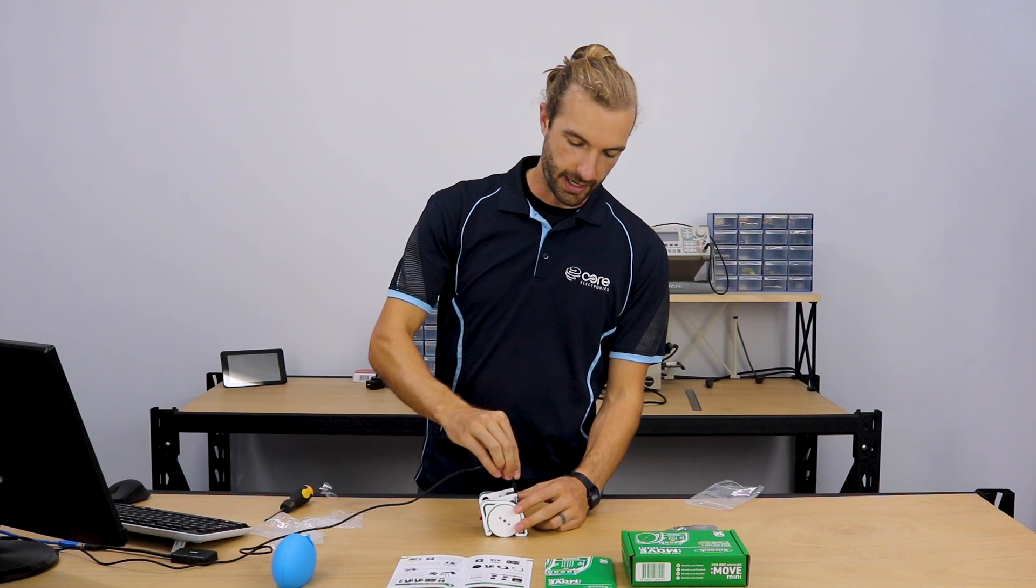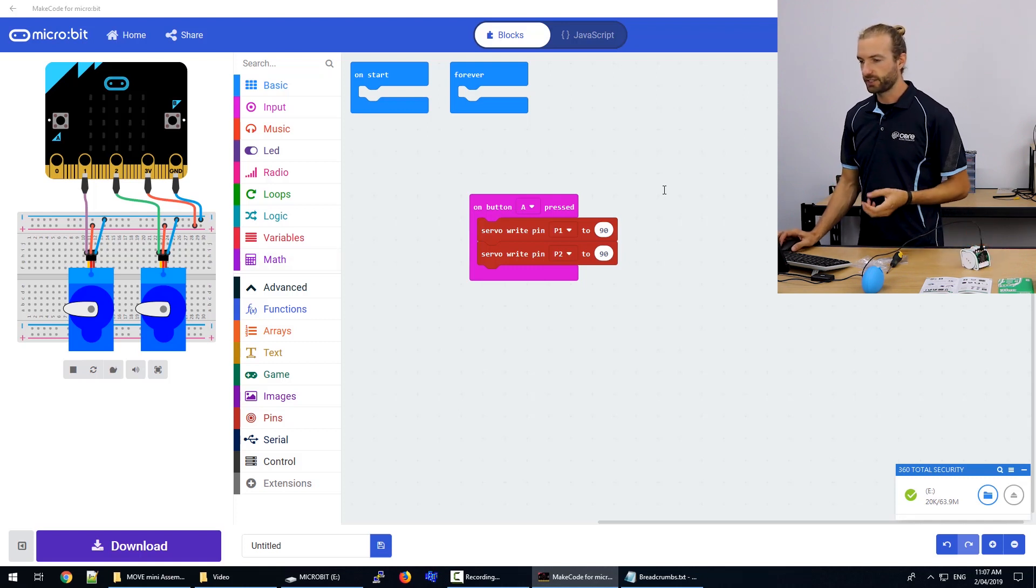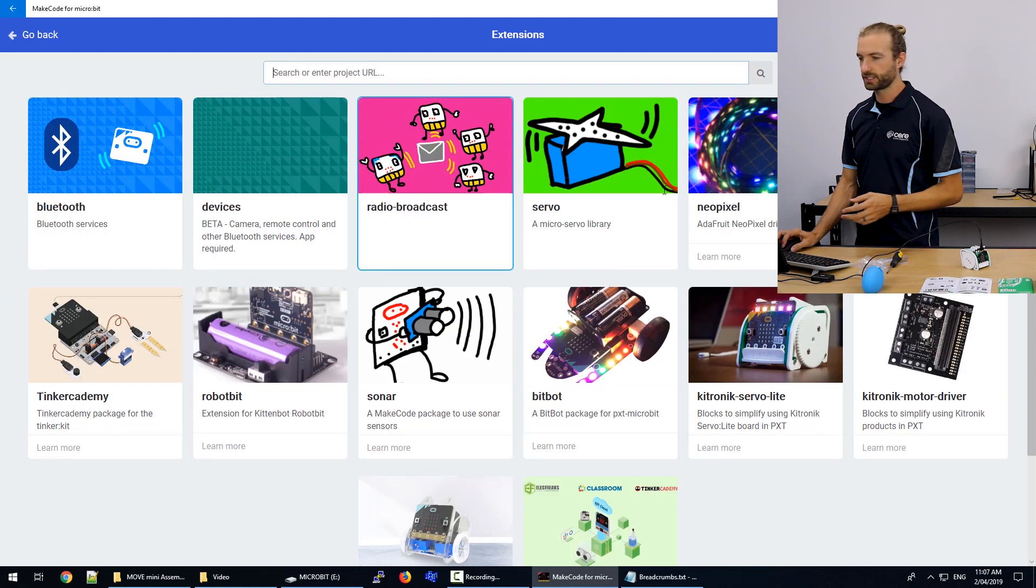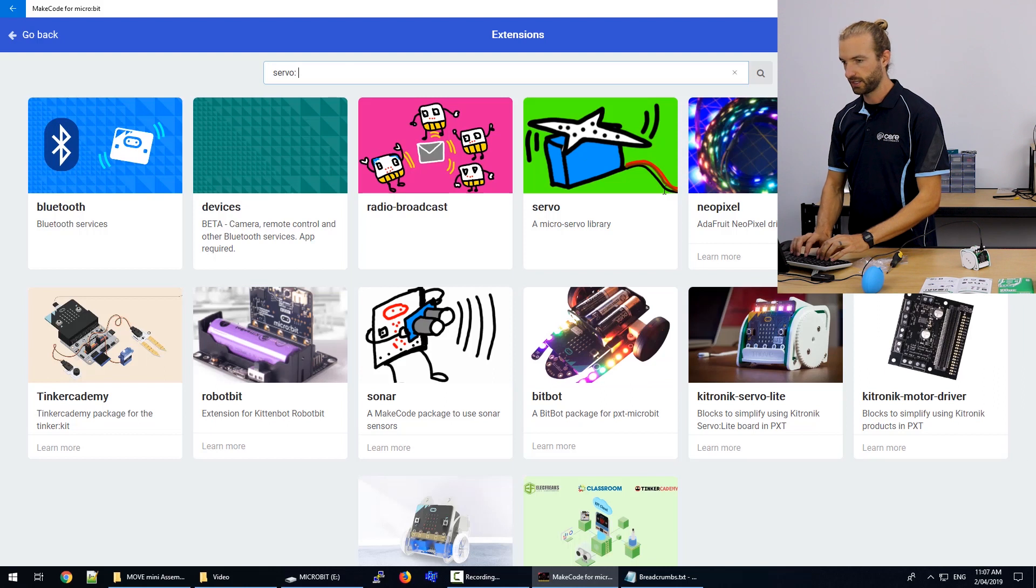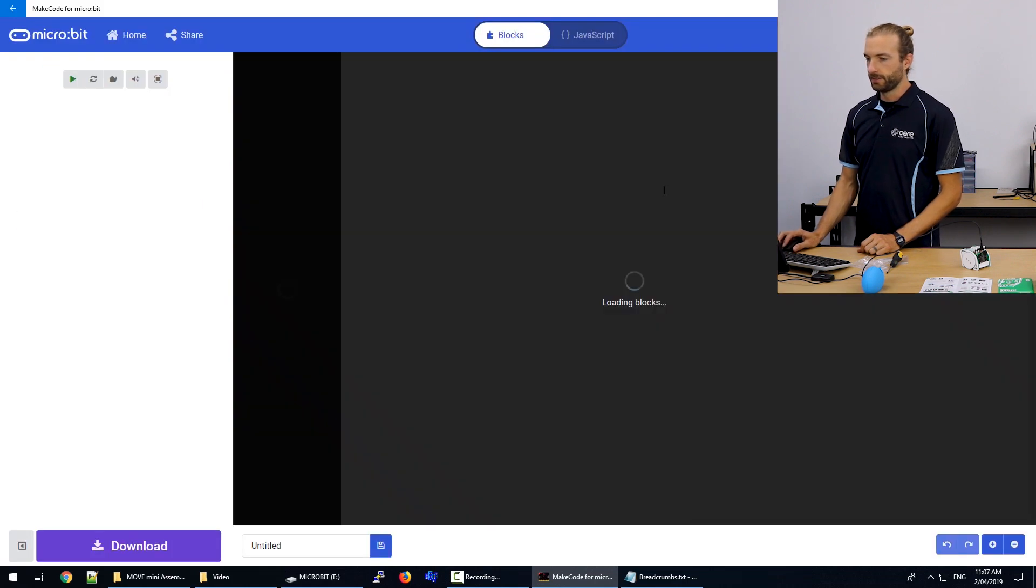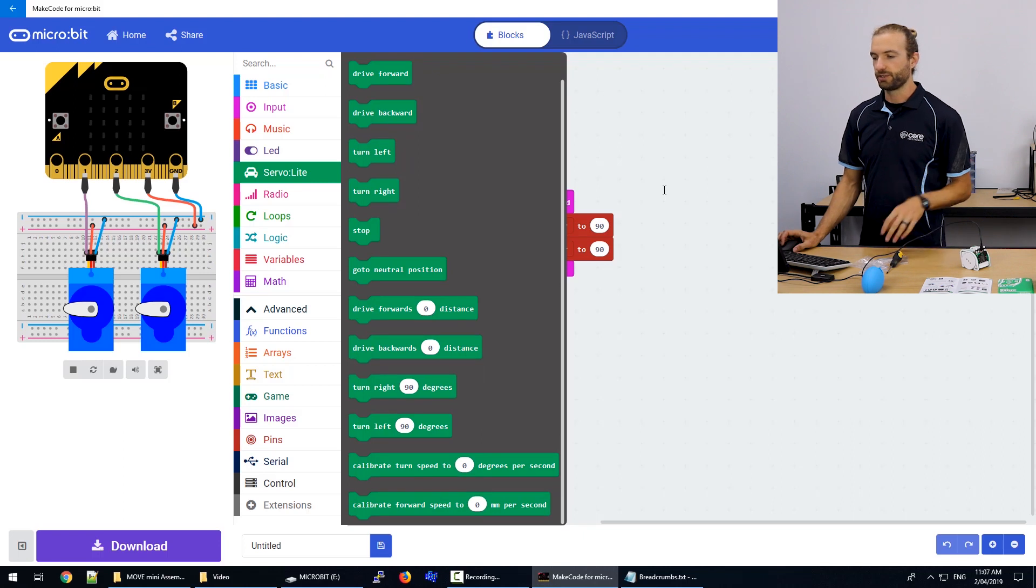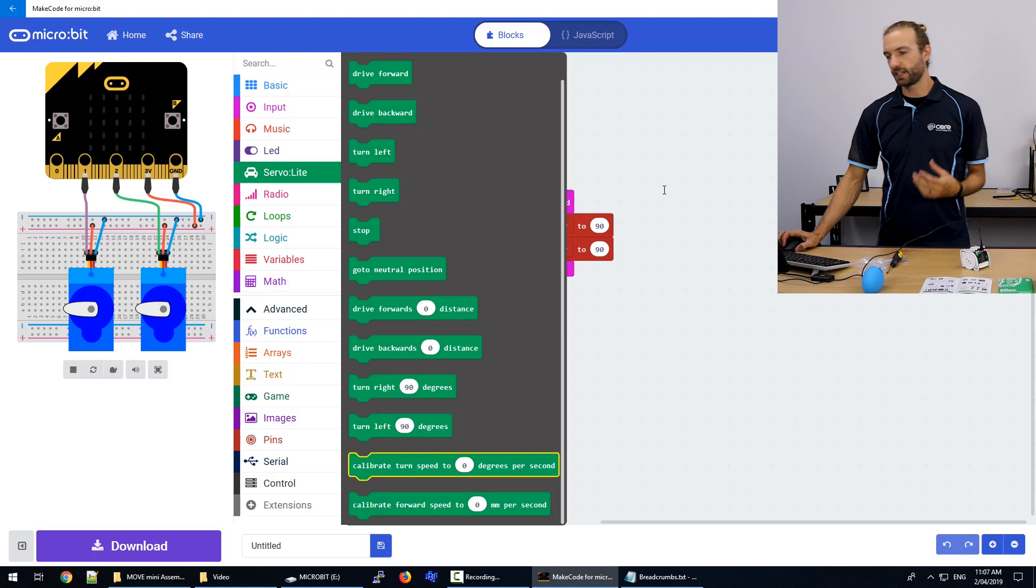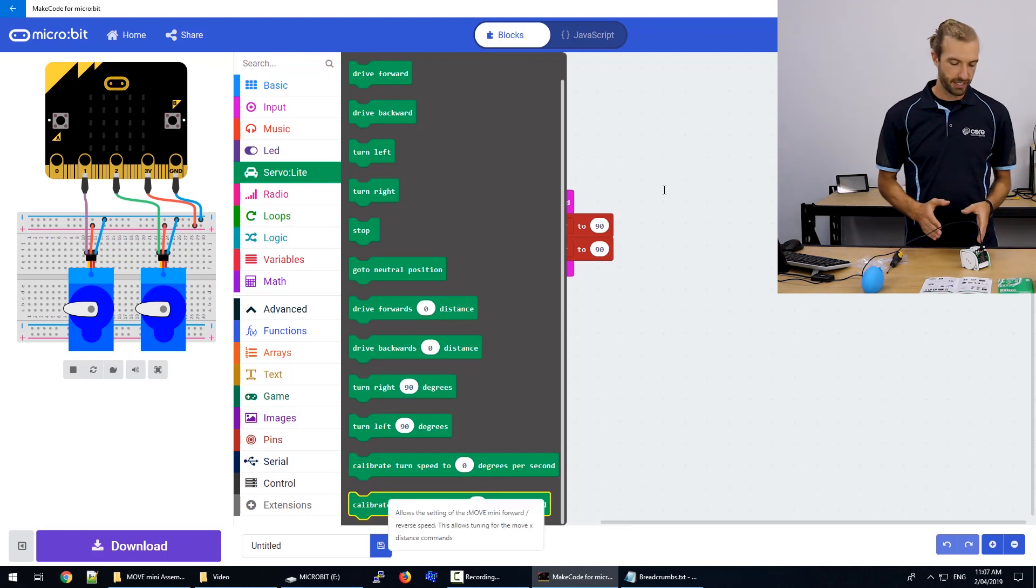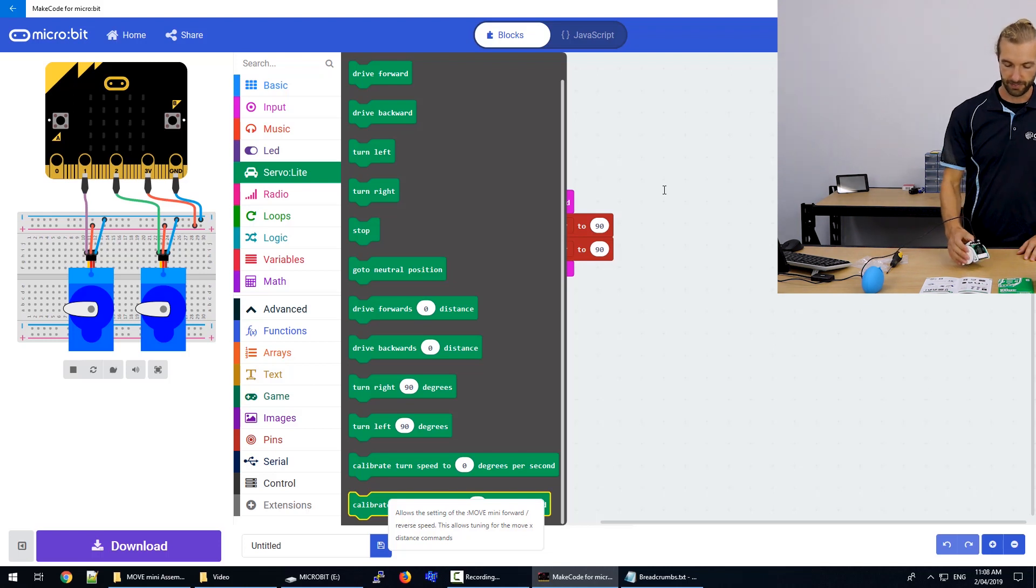And one of the really nice things about the move mini is that you can control it with some custom extensions. So if we go to extensions and then type in servo light with a colon, we'll get the Kitronix servo light plug-in. And this adds a new section of blocks like drive forward, drive backwards, turn left, turn right, etc. that are made specifically to control the move mini. And they're quite intuitive to use. There's also a calibrate turn speed and calibrate forward speed which are pretty essential for setting up how much it turns when you tell it to turn left and right because it may turn more than 90 degrees by default. But that's how you set up the move mini for Kitronix.